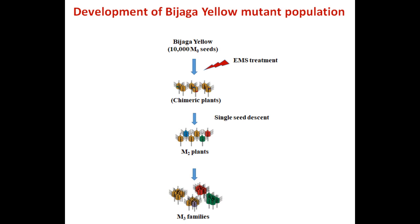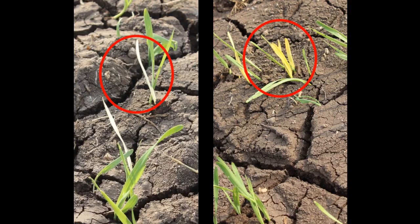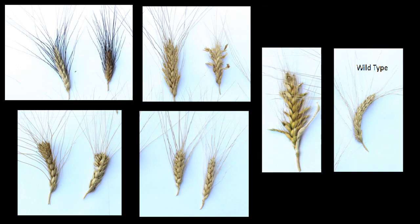Pure seeds of durum cultivar Bijaga Yellow were mutagenized with EMS to obtain a mutant population. We observed many mutants such as chlorotic mutants and spike variation mutants.